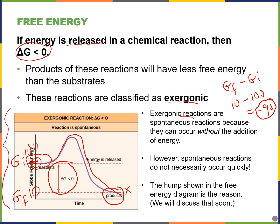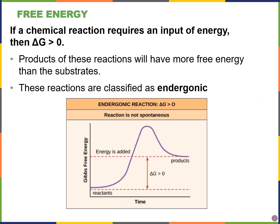Exergonic reactions are called spontaneous reactions because they will happen even if you do not put in any energy. One of the biggest mistakes students make is thinking spontaneous means fast — it does not. Sometimes these reactions take millions of years. As long as you don't have to put in energy and it still happens, whether it takes a thousand or a million years, we still call it spontaneous. Also, there's a little hump on the graph called activation energy, which we'll talk about in a bit.